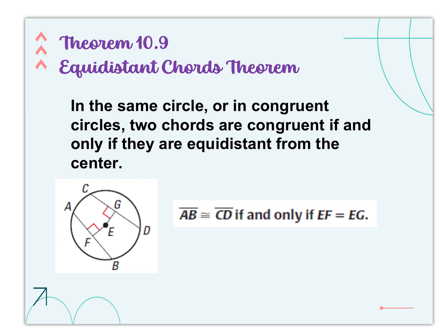We have a couple more theorems, then we'll do some problems. Theorem 10-9 is the Equidistant Chords Theorem. In the same circle or congruent circles, two chords AB and CD are congruent if and only if they are equidistant from the center. To know if something has the same distance to the center, you have to draw a perpendicular line. If EG and EF are congruent lines, then we know that CD and AB are congruent chords.